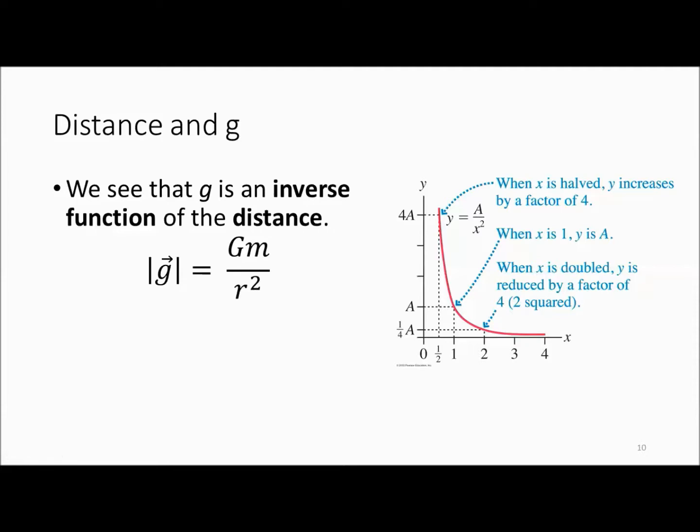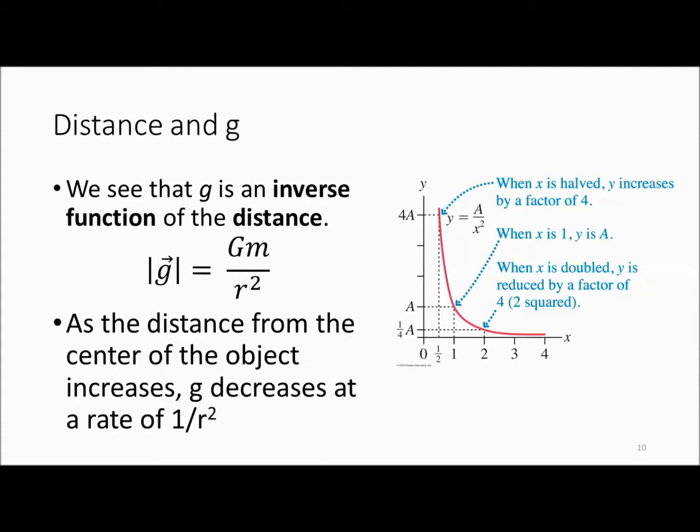As the distance from the center of the object increases, g decreases at a rate of 1 over r squared.